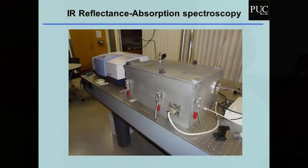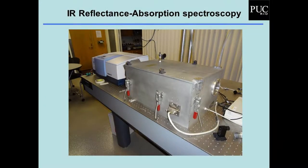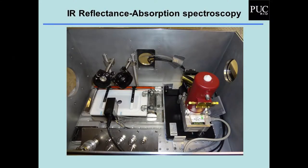Aqui tem um equipamento que não é no Brasil, é no Colorado. Tem um infravermelho e dentro dessa caixa — que fica em atmosfera inerte — tem o mesmo equipamento que há no meu laboratório. Fica mais fácil ver pela janela: o infravermelho vem por aqui, bate nesse espelho, reflete no filme, volta no outro espelho e esse outro espelho leva o infravermelho para o detector. Assim, a gente consegue analisar o infravermelho in situ no filme e observar todas as modificações de conformação e estrutura ao longo da compressão.